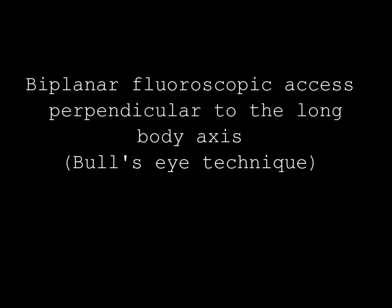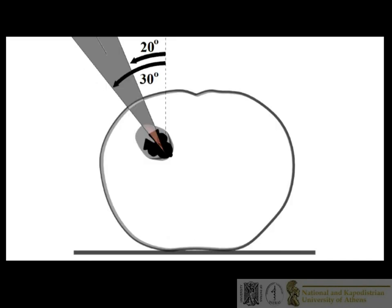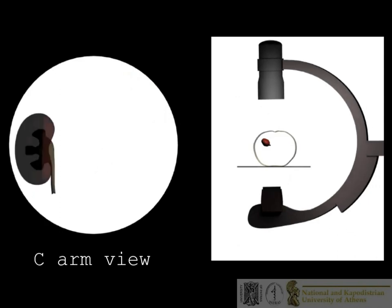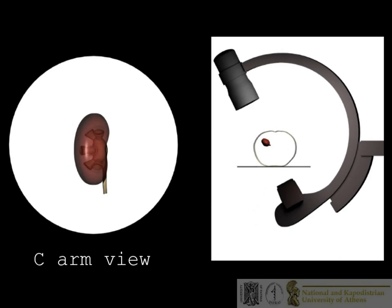Biplanar fluoroscopic axis — perpendicular to the long axis of the body, bullseye technique: the kidney is rotated 45 degrees perpendicular to the long axis of the body. Access through a 25 to 30 degree angle provides direct access to posterior calyces through the Brödel avascular plane. For the bullseye technique, the CRM is rotated at 30 degrees and the target calyx is selected at this plane.